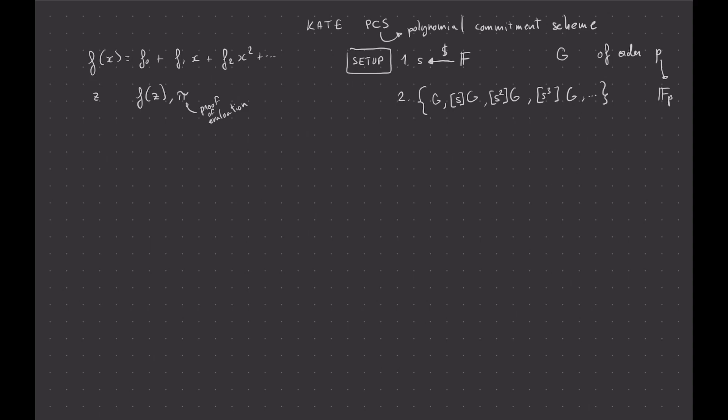So we'll see later that it doesn't really matter because you can split a polynomial into different parts, and so that upper bound is not really a constraint. It's more of a trade-off in how long you want your proofs to be. But I'm not going to get too much into the details here. You can just imagine that we go up to some degree D. So anyway, this thing becomes the SRS, the structured reference string that both the prover and the verifier have. And now, if you want to do a commitment, so let me write the commit algorithm here.